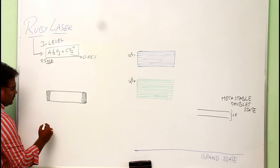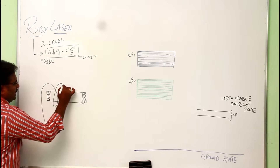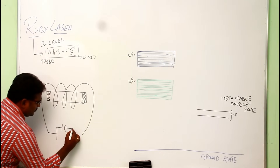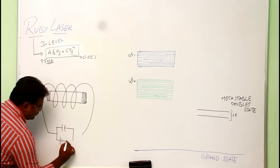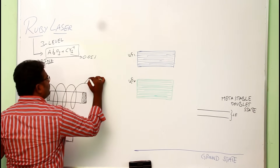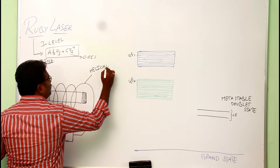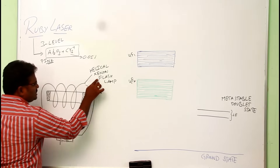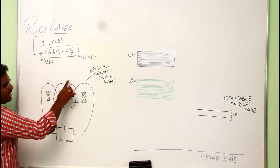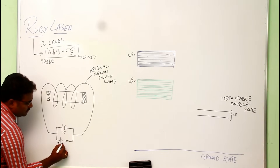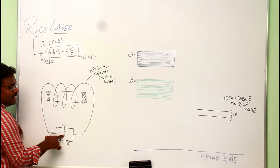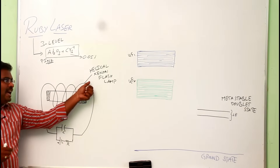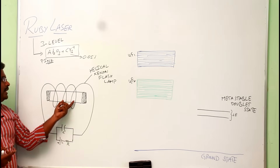For the excitation process, we keep the ruby rod inside a helical xenon flash lamp. The circuit of this lamp consists of a capacitor — while the capacitor is discharging, the lamp is on; while it is charging, it is off. So overall it never gives continuous light — it gives flashing on-off light.